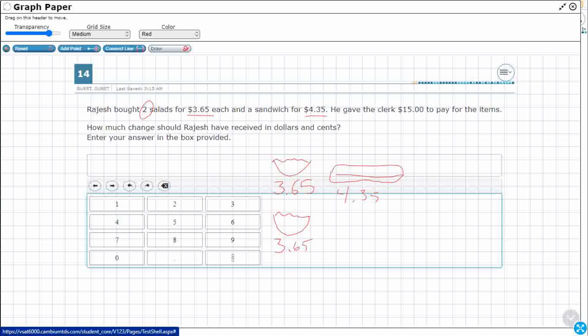I wonder how much that is. They don't tell us yet. We don't know what the total is. He gave the clerk $15. Okay, so he's going to pay with a $10 and a $5, and we need to know how much change. Well, in order to know how much change there is, first I need to figure out how much did he spend.